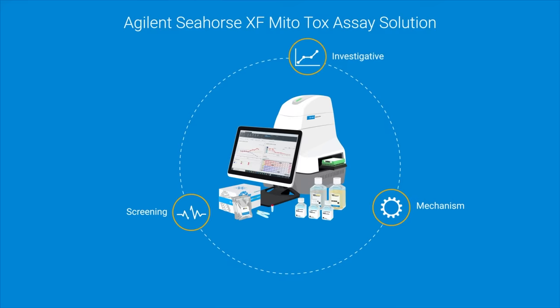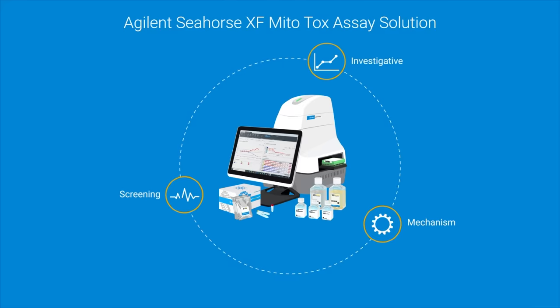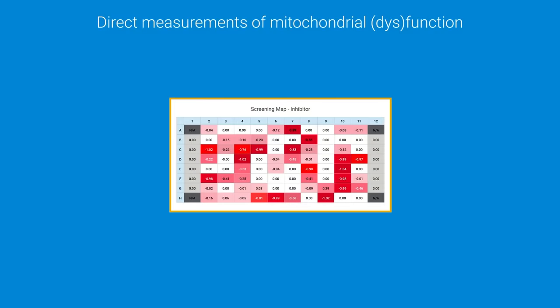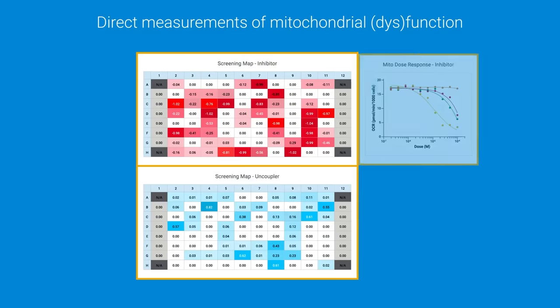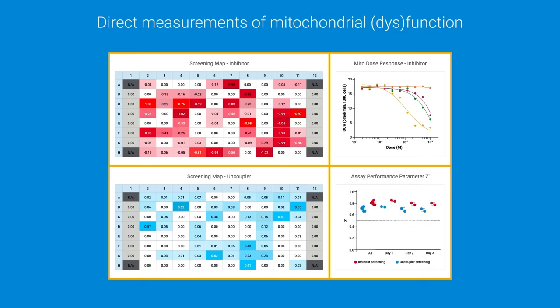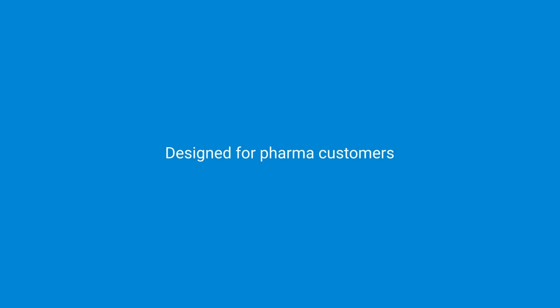A recognized pathbreaker in interrogating mitochondrial function and dysfunction, Agilent Seahorse XF technology has the solution, providing high sensitivity and specificity for screening, investigative, and mechanism studies. The new Agilent Seahorse XF mitotox assay solution effectively detects mitochondrial toxicity, achieved by enabling direct measurements of mitochondrial function.